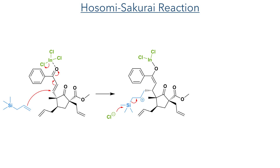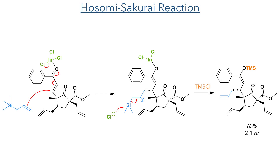With this allylation now complete they could then introduce the third and final allyl group. This was done using a Hosomi-Sakurai reaction. Allyltrimethylsilane was reacted with the compound together with indium trichloride, which acted as a Lewis acid to activate the enone. The chloride then attacks the TMS group, which eliminates to form a ketone and neutralize the secondary cation. The enolate intermediate formed by this reaction was then trapped using TMS chloride, and the reaction produced the target in a 63% yield with a 2:1 dr. This stereoselectivity likely arises from the adjacent methyl group which would block one face of the enone.